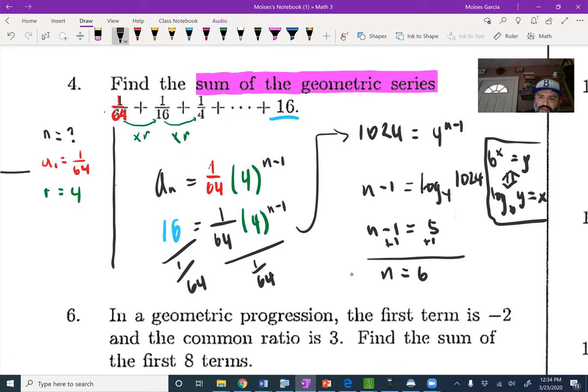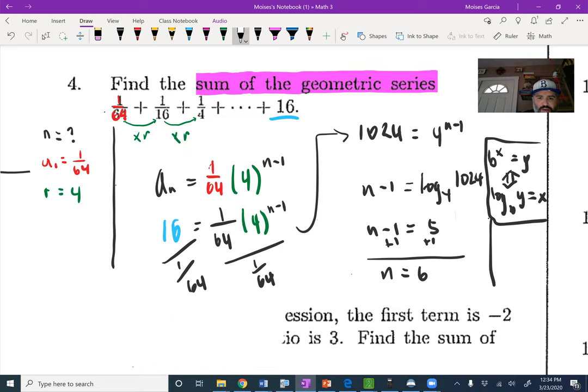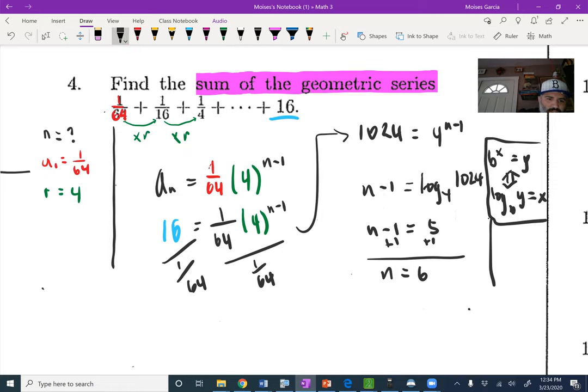Once you figure out that n equals 6, then you can go ahead and take the sum of that. Let's do two things: let's continue writing this in sigma notation. So n is 1 all the way to the sixth term of 1 over 64 times 4 to the n minus 1 power.